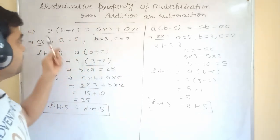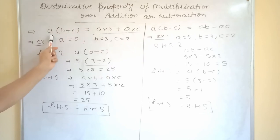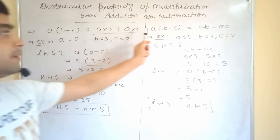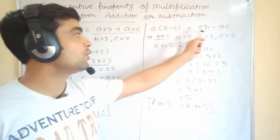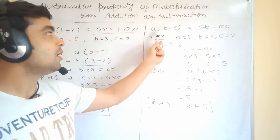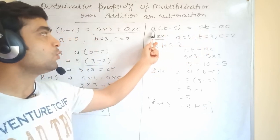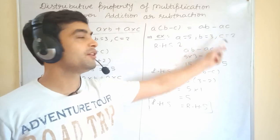So, sometimes, if you will be given expression like this, so you can write like this. If sometimes given expression like this, so you can write like this. Again, a number which are outside, you can distribute equally. Like this.